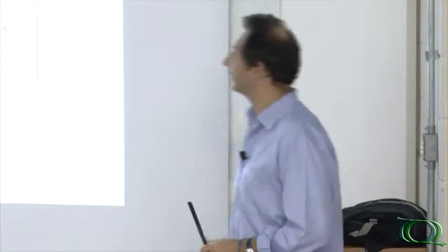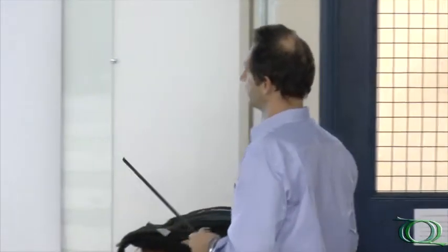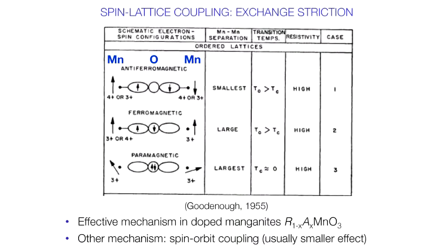So the lattice distortion is driven by the electronic energy. And that's very important for the following. Now, I've just considered the charge degrees of freedom. What about the spin degrees of freedom? Let's consider spin-lattice coupling. I just showed the charge lattice.